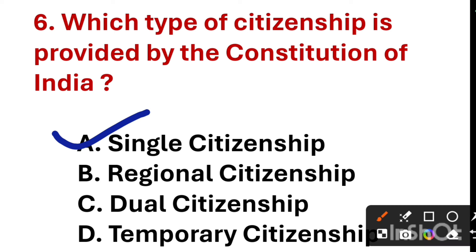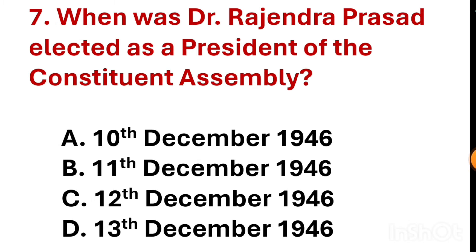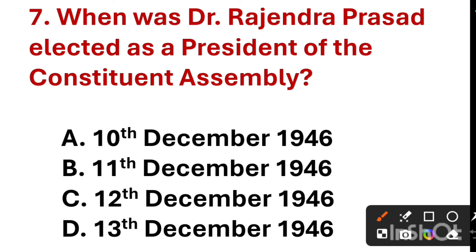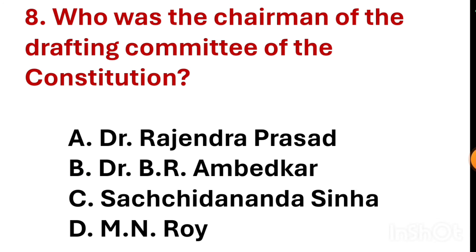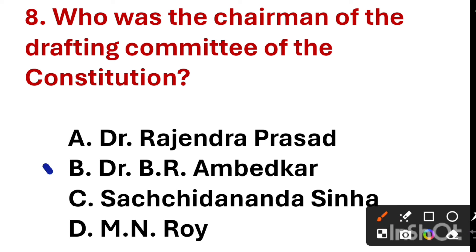The correct answer is option C — Sachitananda Sinha. Which type of citizenship is provided by the Constitution of India? The correct answer is option A — single citizenship. When was Dr. Rajendra Prasad elected as president of the Constituent Assembly? The correct answer is option B — 11 December 1946. Who was the chairman of the drafting committee of the Constitution?